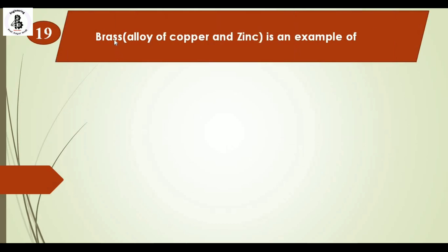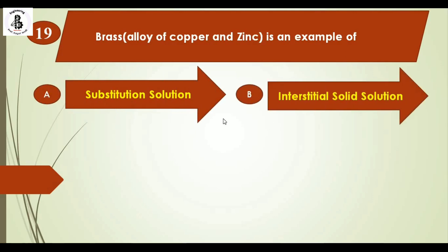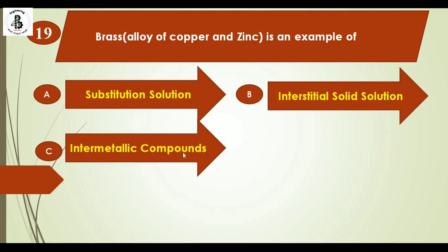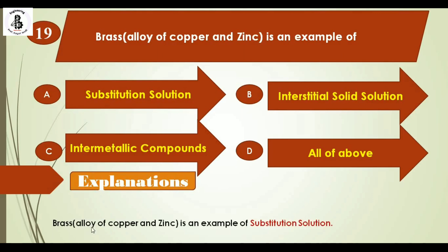Brass, the alloy of copper and zinc, is an example of: option A substitutional solid solution, option B interstitial solid solution, option C intermetallic compounds, and option D all of the above. Brass is an example of substitutional solid solution because the atomic sizes of copper and zinc are almost the same. The right answer is option A.